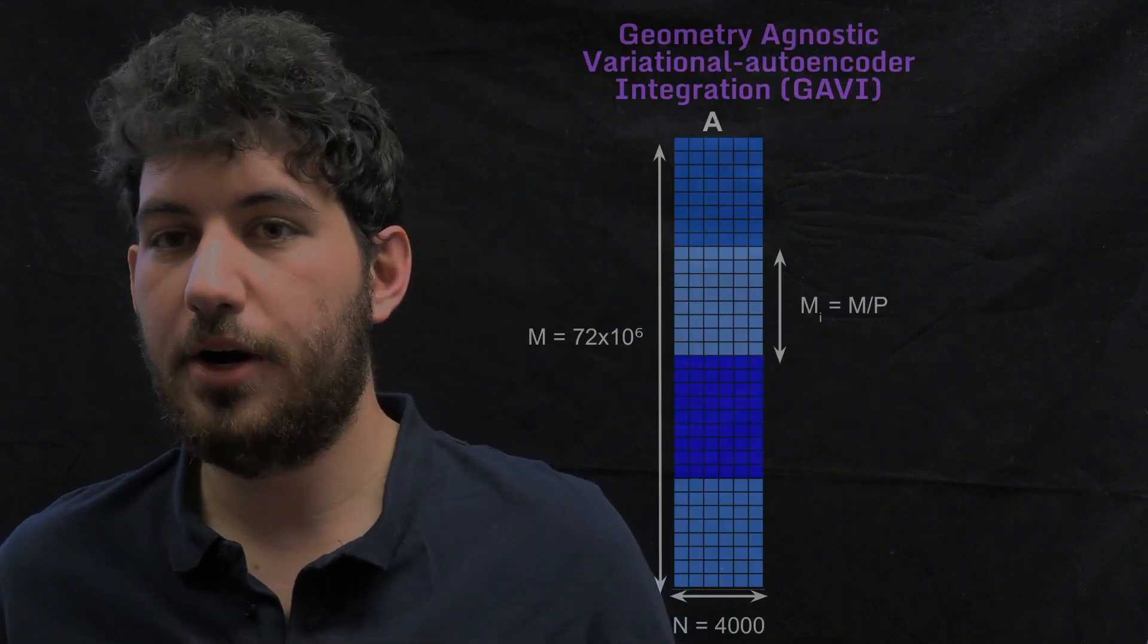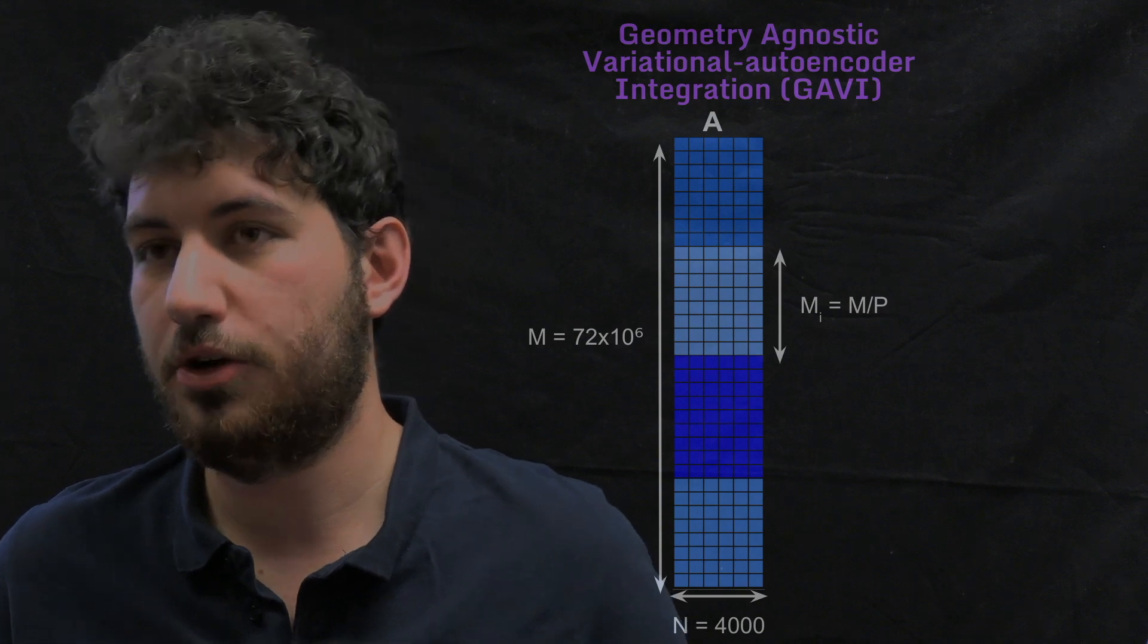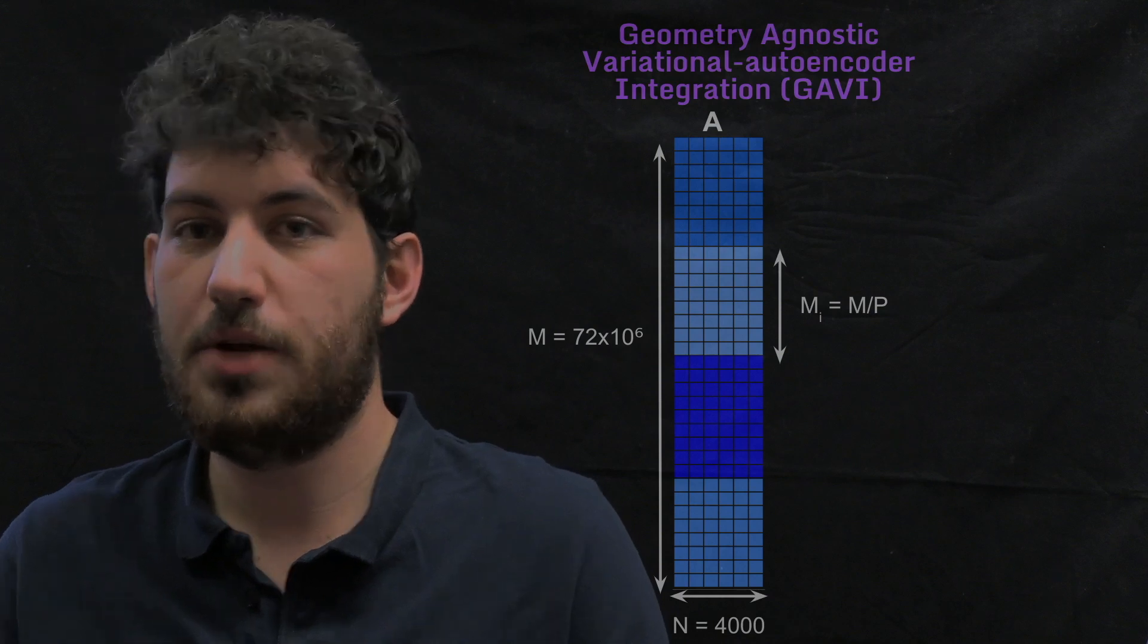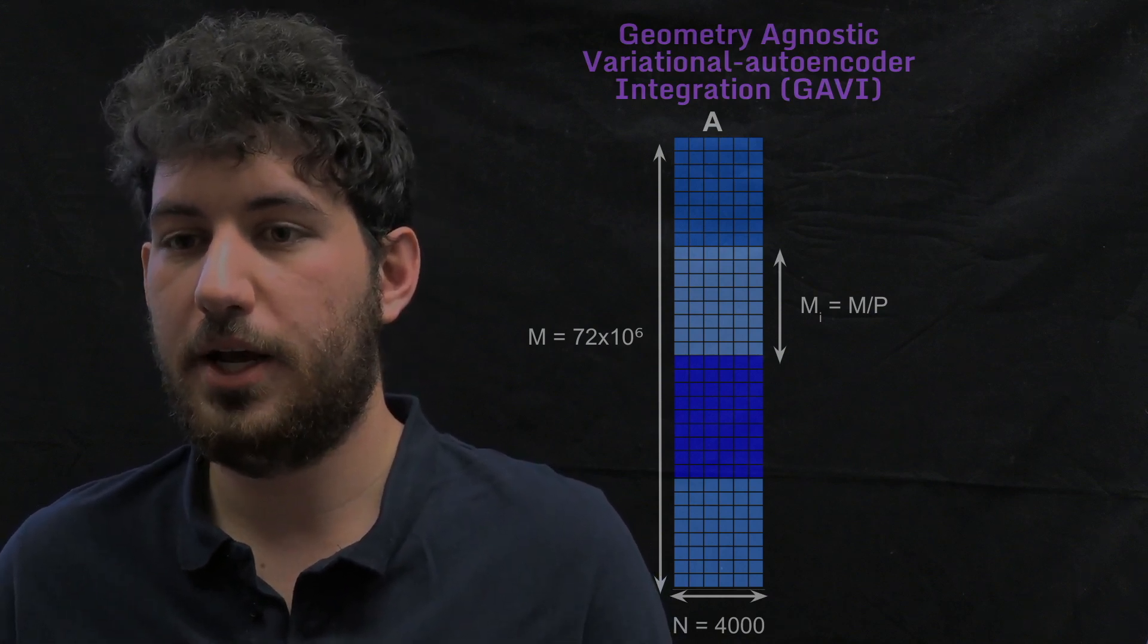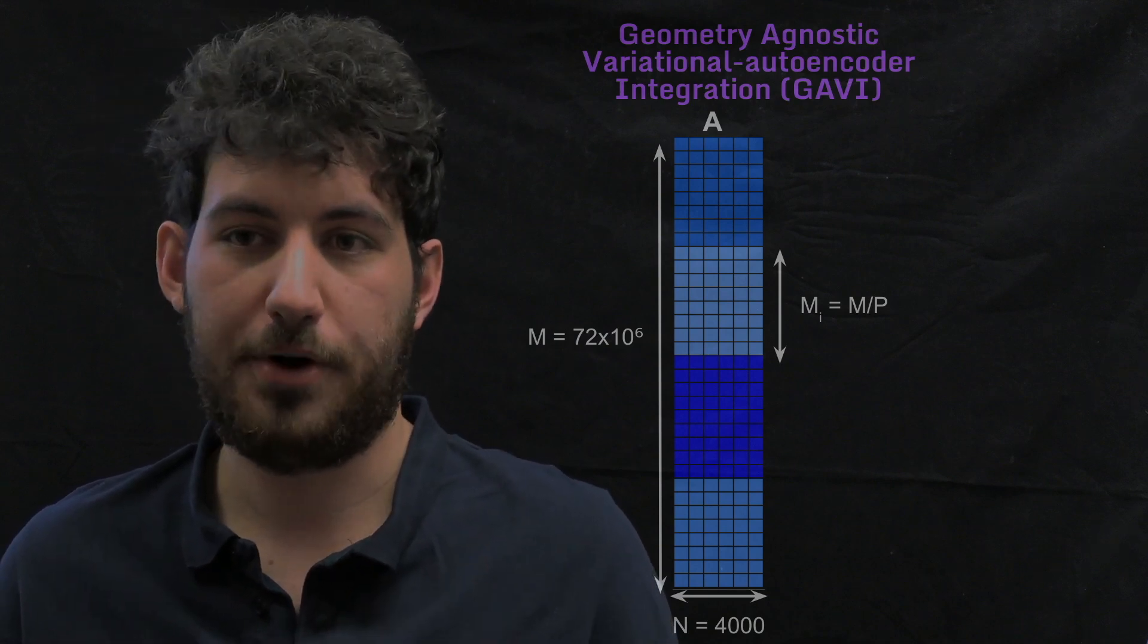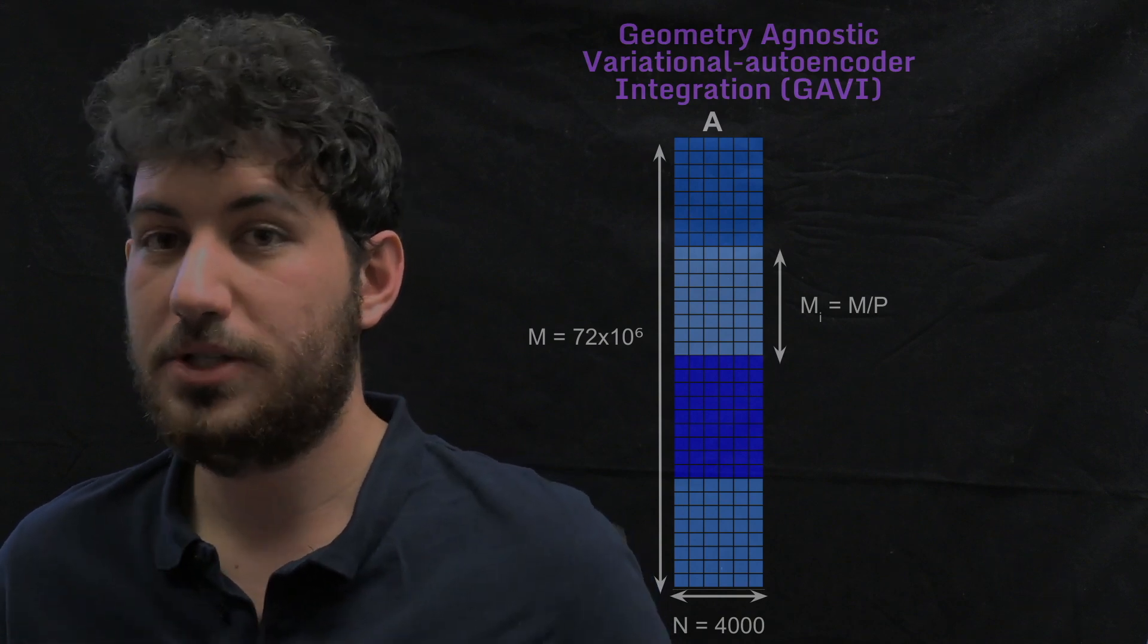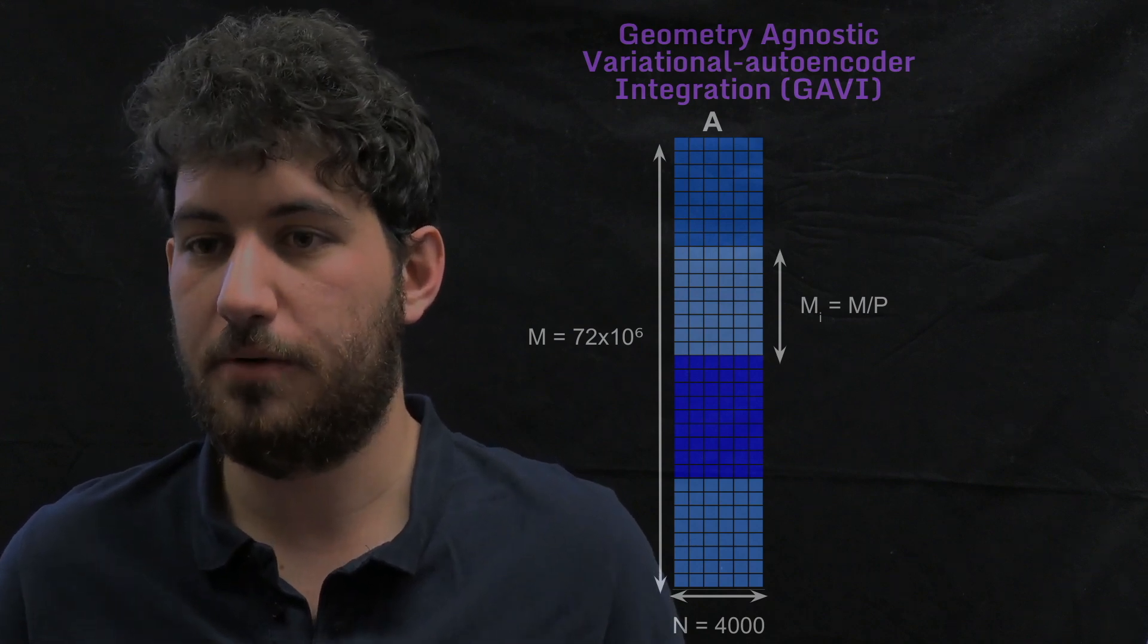That's why here we are presenting a different methodology that we call Geometry Agnostic Variational Autoencoder Integration, that stands for GAVI. The first step of GAVI is just collecting our data into a snapshot matrix like we do for the algebraic methods. In this matrix, we basically have one column per snapshot and one row per grid point. In the case that I'm describing, we have 72 million rows and 4,000 snapshots. This data matrix is so huge that we need to parallelize it between different processors because we cannot even fit it in memory.